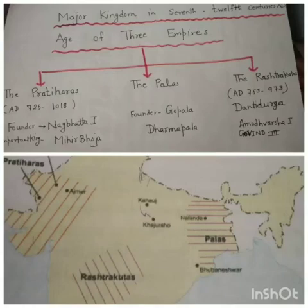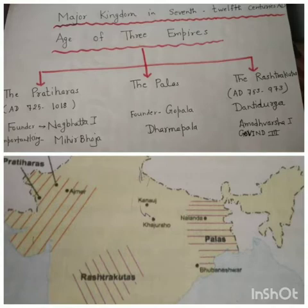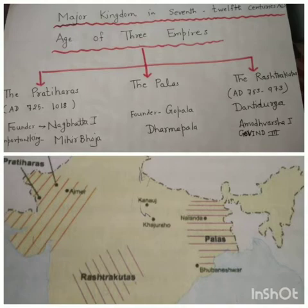Good morning students. The division of chapter 'The Rise of Small Kingdoms in North India' is going on. In the previous class, we discussed three powerful kingdoms that arose between 750 CE and 1000 CE out of the ruins of Harsha's Empire: the Rashtrakutas, the Palas, and the Pratiharas. After that, we discussed the tripartite struggle.